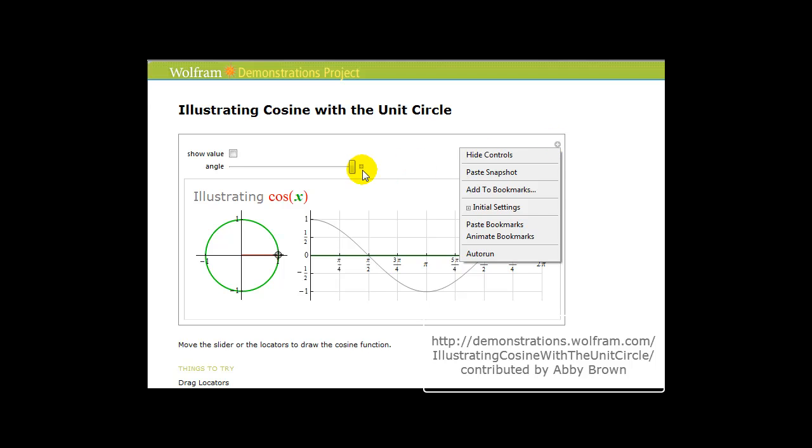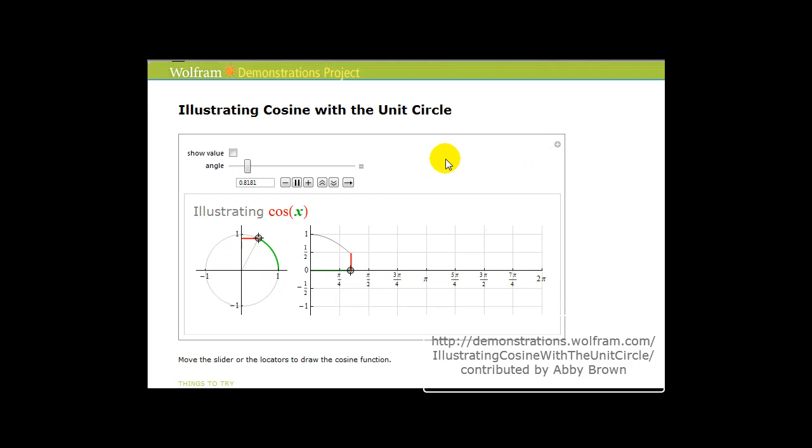Let me go ahead and animate this, so you can just watch it. Again, keep in mind the cosine function is equal to the x-coordinate of the point on the unit circle, where the terminal side of the angle intersects the unit circle.